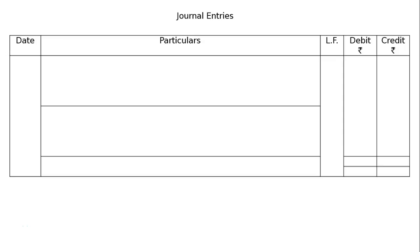The question is: A and B are partners sharing profits and losses in the ratio of 3 to 1. They agreed to admit C into the partnership business to get one-fourth share of the firm in future profits. At the time of C's admission, there was a general reserve of 4,000 appearing in the balance sheet of A and B. A revaluation of assets and liabilities resulted in a gain of 2,000. Pass necessary journal entries on C's admission.